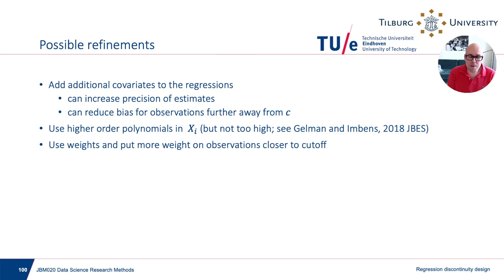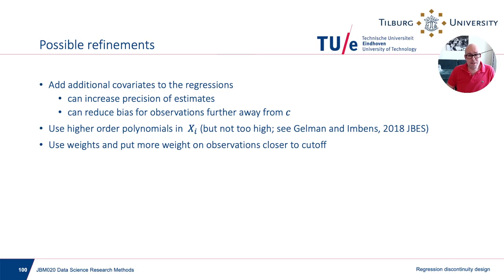Possible refinements include adding covariates, which improves precision of estimates and can reduce bias for observations further from c. When including observations further from c with a bigger bandwidth, controlling for covariates reduces the importance of the linear approximation. The main reason practitioners add covariates is to increase precision — explaining more variation in the data leaves less variation in the residuals, allowing more precise estimation of the conditional expectations.